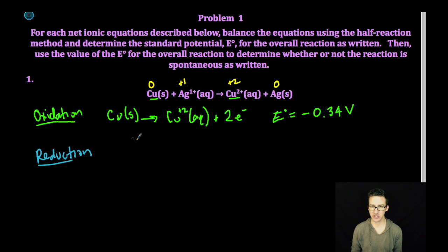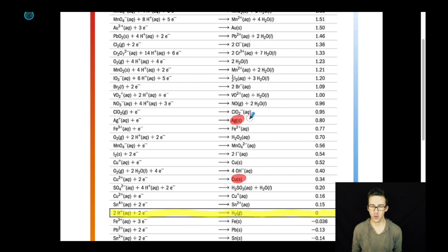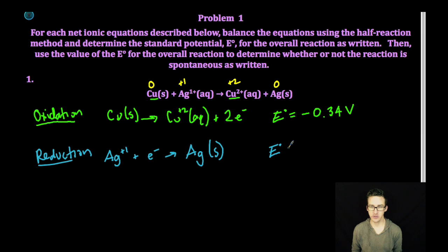Our reduction half-reaction, the silver ion will be reduced by gaining one electron for every silver ion reduced to form solid silver. As I check out my reduction potential for silver, boom, its reduction potential is positive 0.80. So definitely more likely to be reduced than copper. Because it's being reduced, we're simply going to leave it as is, positive 0.80 volts.